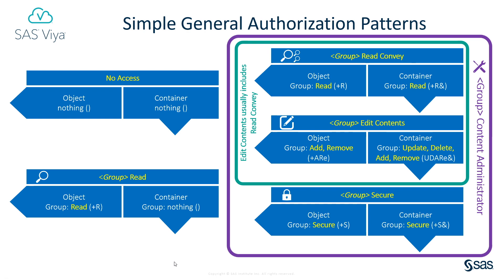No access is easy. So long as the group is not inheriting any conveyed permissions from a parent folder in the object hierarchy or from a parent group in the group hierarchy, they'll have no access to this object. By doing nothing — through masterly inactivity — you can ensure that the group continues to have no access. To implement the group read pattern, grant this group the read permission on the object itself, but nothing on the object's container. To implement the group read convey pattern, grant this group the read permission on the object itself and also the read permission on the object's container, so that it's conveyed to the object's contents.